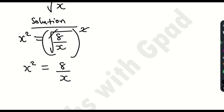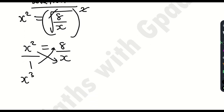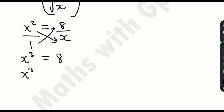I can do one of two things: multiply both sides by x or cross multiply. Let me just cross multiply. I'm going to have x times x squared, which is x cubed, and this is equal to 1 times 8, which is 8.